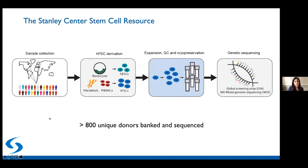It's important to examine cells from many different human genetic backgrounds, from healthy controls or from people with a certain diagnosis. To enable this, the Stanley Center has established large international collaborations to obtain, reprogram, and use pluripotent stem cells from many different people. We currently have over 800 unique donors represented. We take these pluripotent stem cells, expand them, QC them, and cryopreserve them. Very importantly, we also obtain sequencing data such as whole genome sequencing, which empowers downstream experiments so that any analyses are grounded in genetic information.